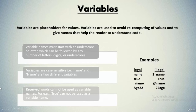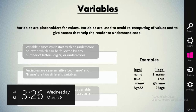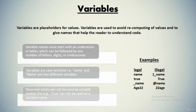Reserved words cannot be used for variable names. For instance, 'true' cannot be used as a variable name because 'true' is already a boolean keyword in Python. You can refer to these examples: you can name a variable like this, but you cannot name a variable starting with a digit. Similarly, you cannot use 'true' with a small 't' or a capital 'T' as a variable name because it is already a keyword.